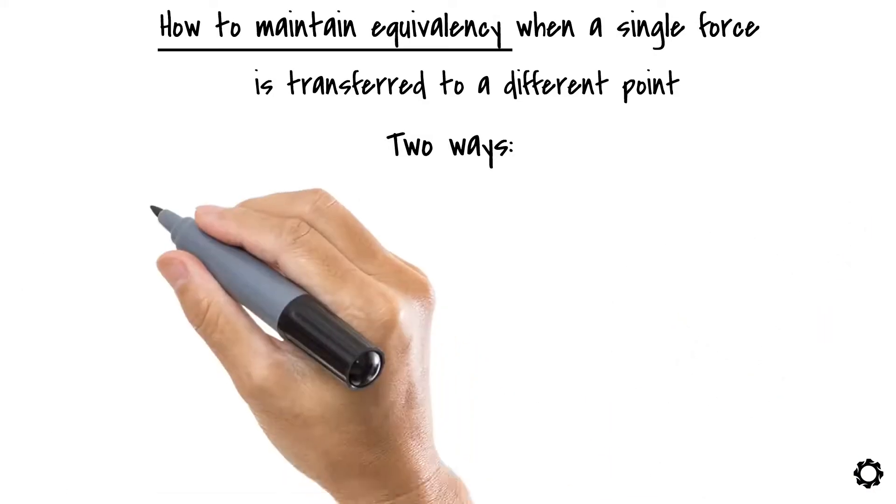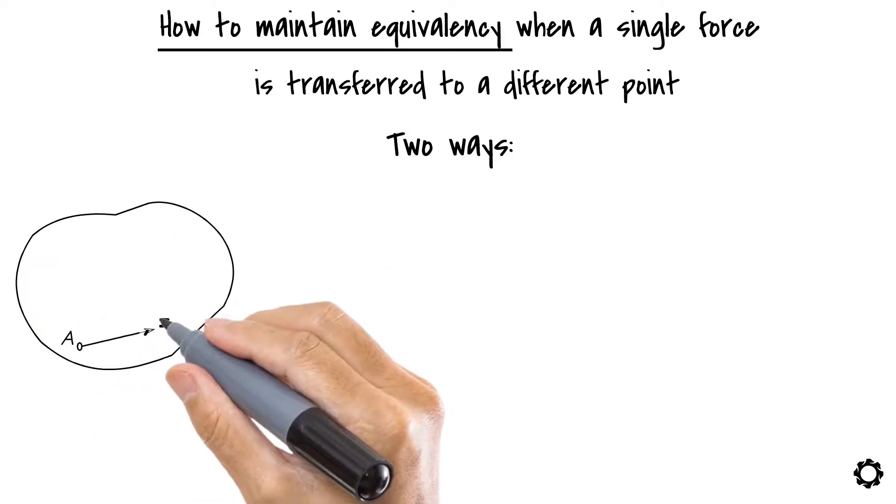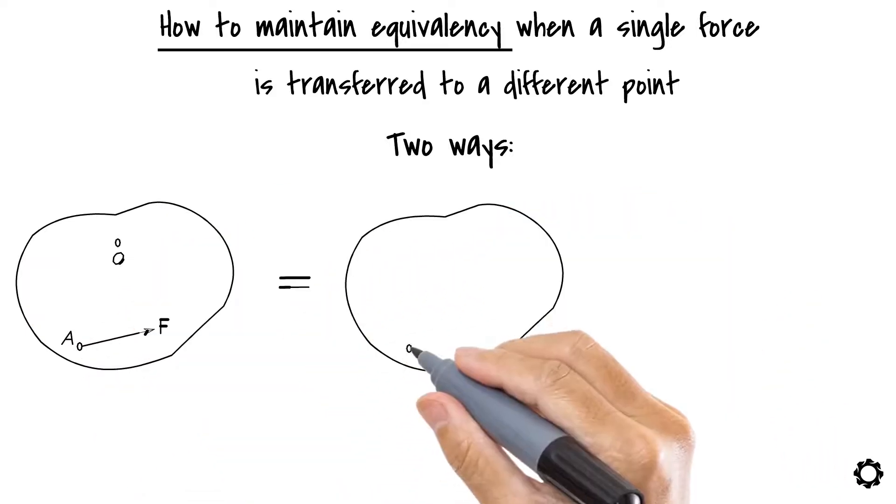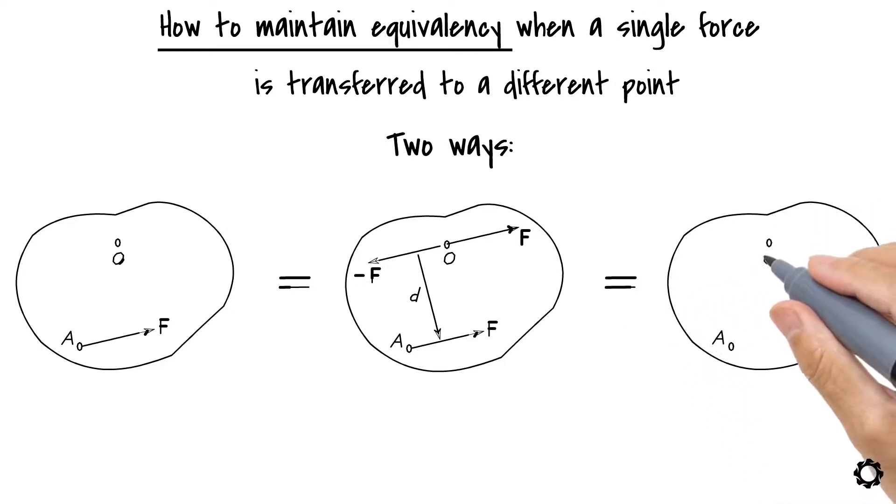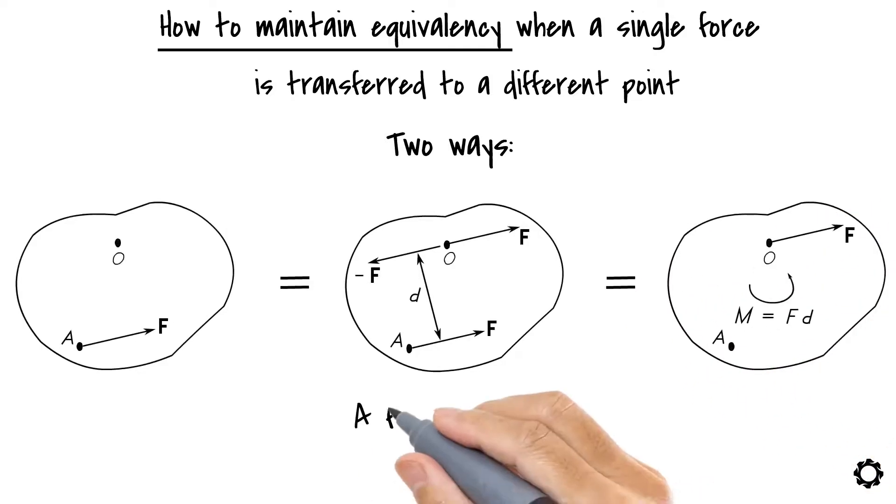In another case, we could move the force from point A to point O which is not located along the original line of action of the force. In this case, we will have to define a couple moment which is a free vector and thus can be located at any point on the body.